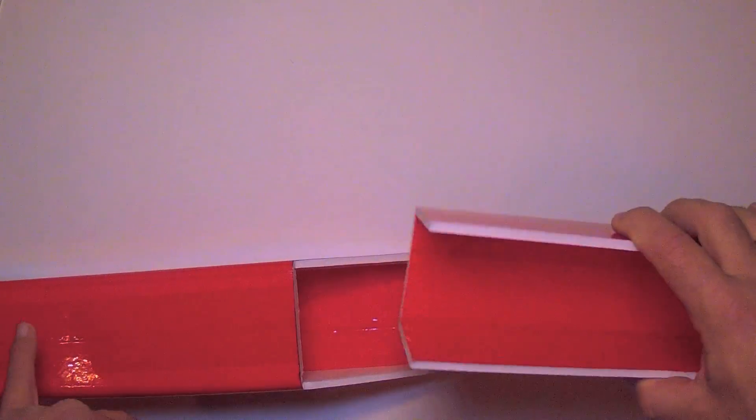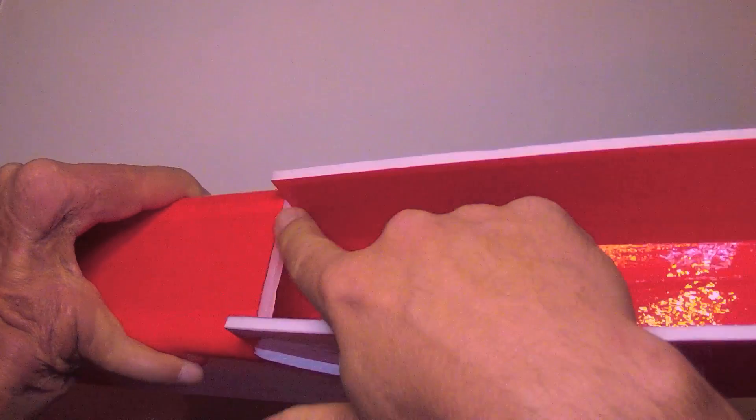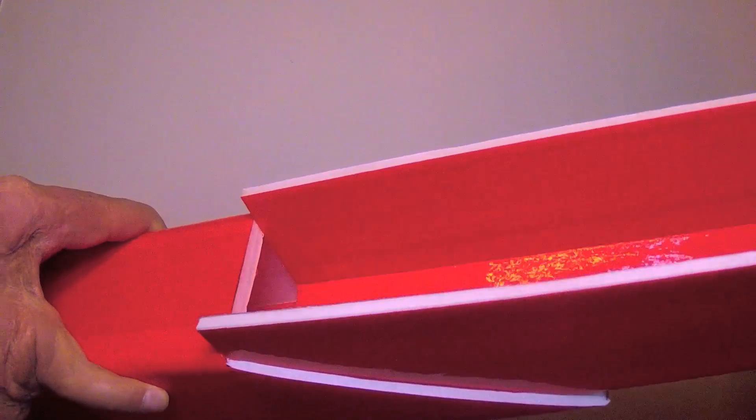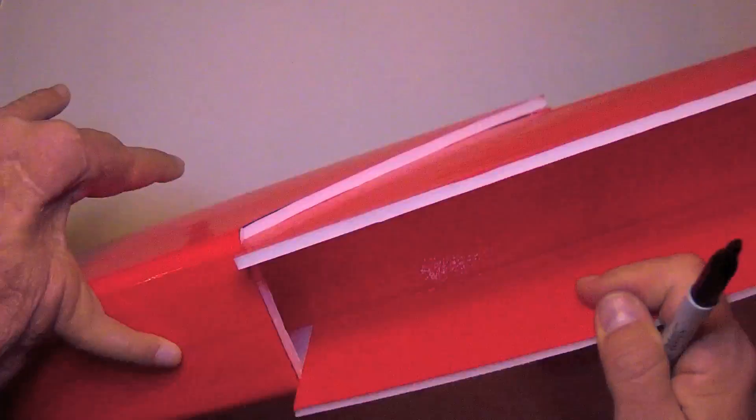Now, having folded up your tray, go ahead and slide it into your fuselage like that, and take note of where it clears the edge of the fuselage interior, and mark that spot on both sides.